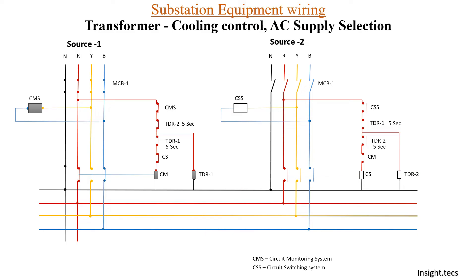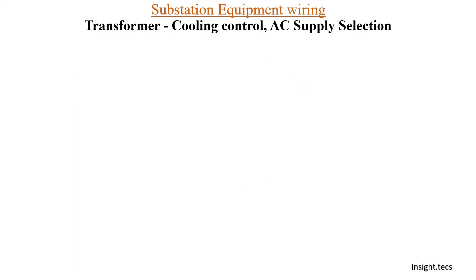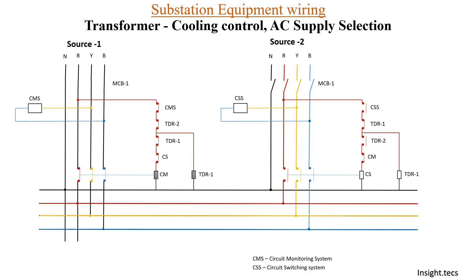Now we will see how source 2 is working. Whenever source 1 is not available, the CMS contact will not be operated. Because source 1 is not operated, source 2 has to operate, so we will be using source 2. In this case, TDR1 relay will also not be operated. Our entire supply will be available from source 2 only. The contact will not be operated and the switch will get opened.